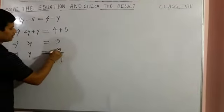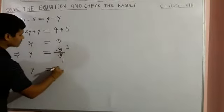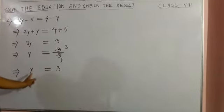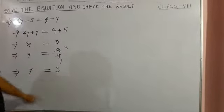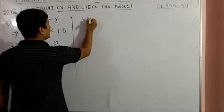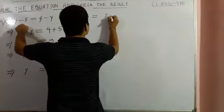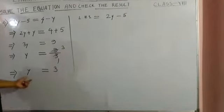So what is the value of y? This is 3. Now we got the result, y is equal to 3. This is what we got. We can check this. Left hand side, LHS, we have 2y minus 5. And y we got 3.